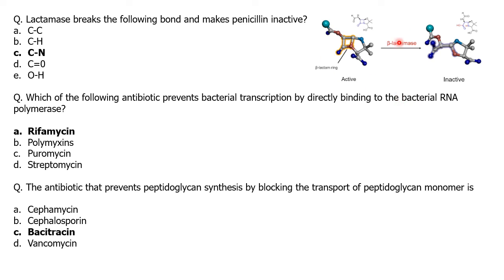Which antibiotic prevents bacterial transcription by directly binding to bacterial RNA polymerase? Then: which antibiotic prevents peptidoglycan synthesis by blocking the transport of the peptidoglycan monomer — cefromycin, cephalosporin, bacitracin, or vancomycin? The answer is bacitracin, as it prevents peptidoglycan synthesis by blocking monomer transport.